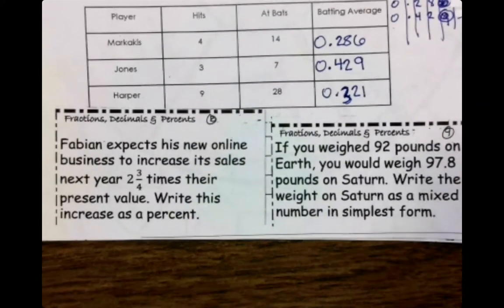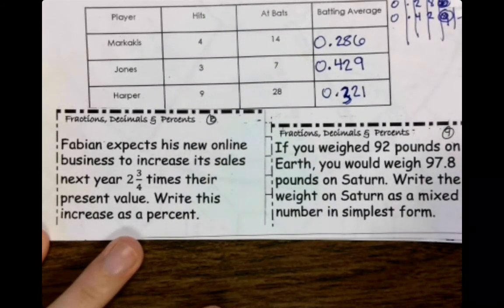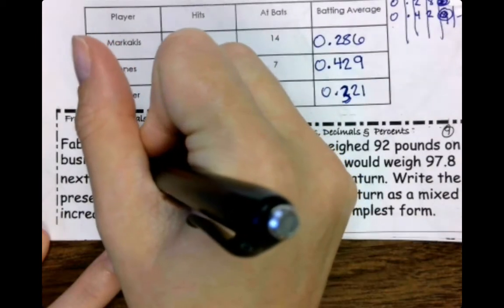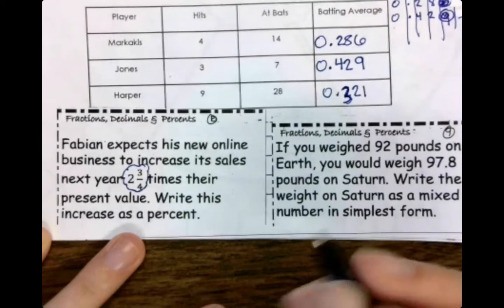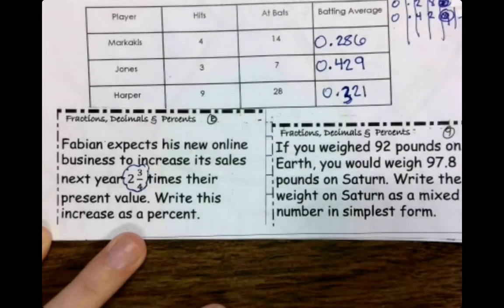Last two questions. Fabian expects his new online business to increase its sales two and a half, two and three-fourths times their present value. Write this increase as a percent.